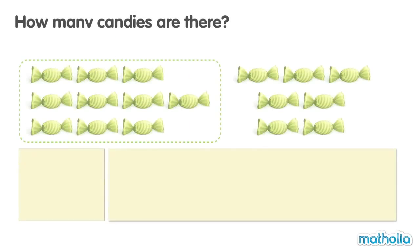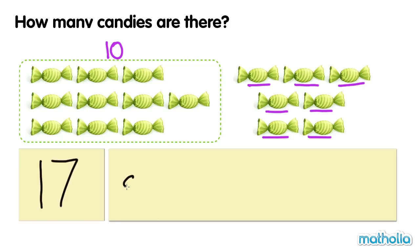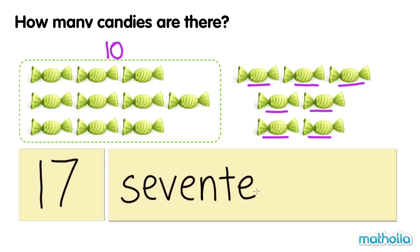How many candies are there? Ten, eleven, twelve, thirteen, fourteen, fifteen, sixteen, seventeen. There are seventeen candies. Seventeen.